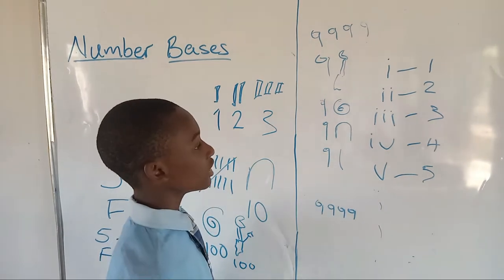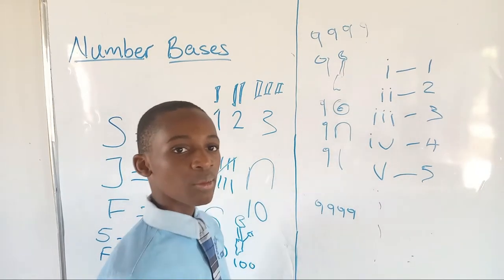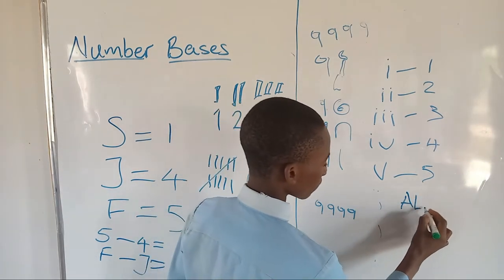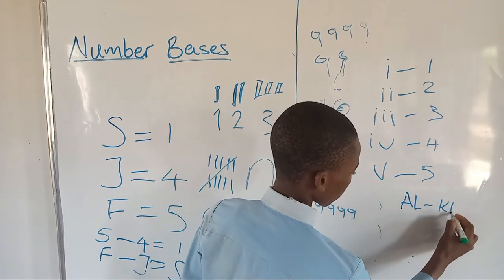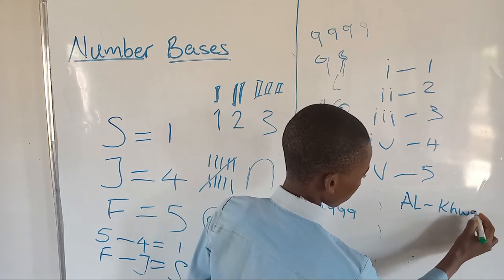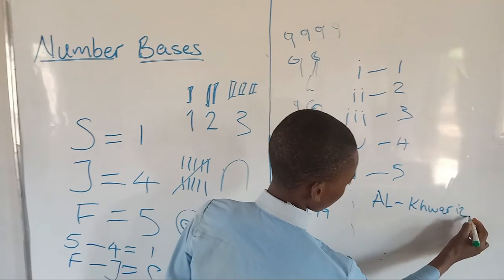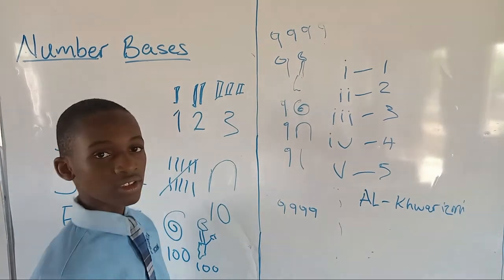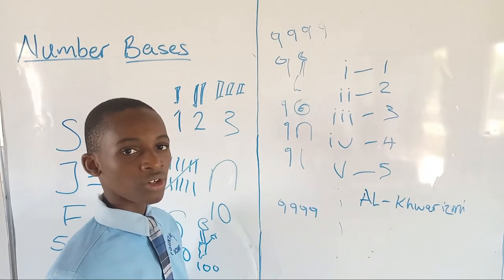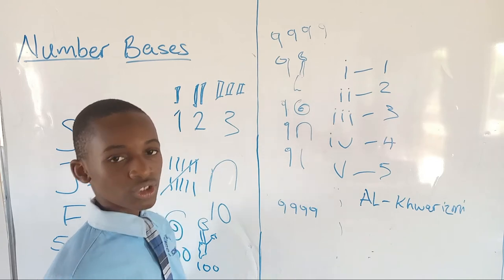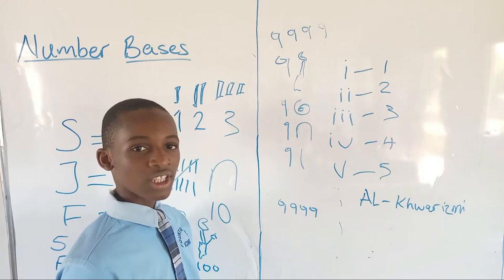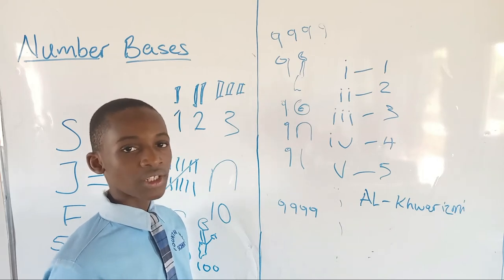So then in the 7th century, a mathematician named Al-Khwarizmi invented the base 10 number of counting, which was 0 to 9. And it was later released in the 20th century.